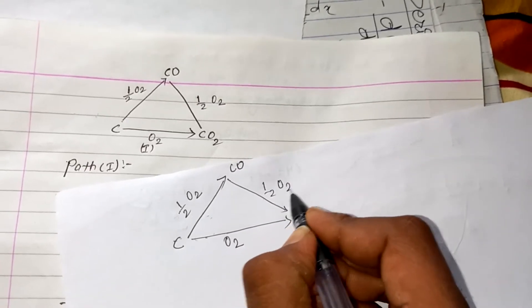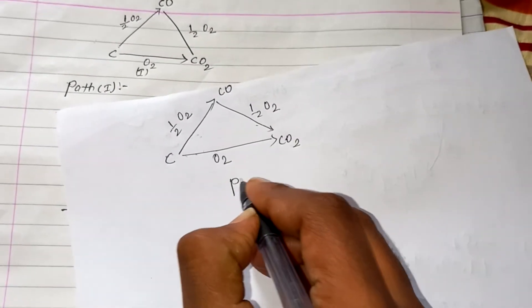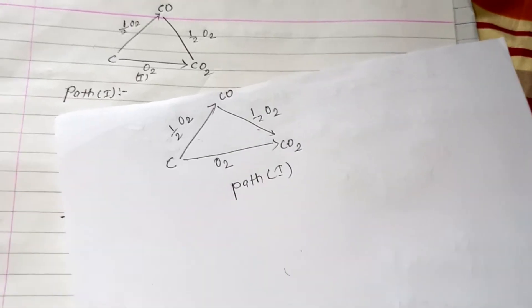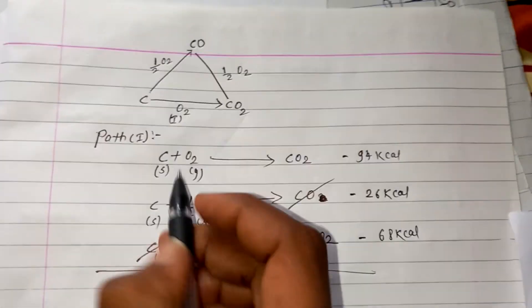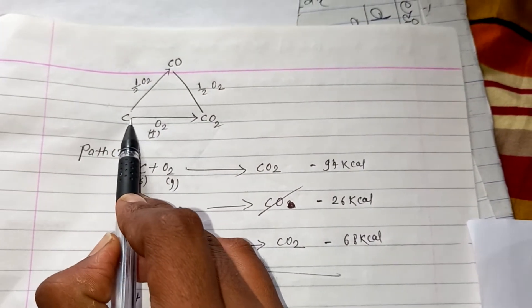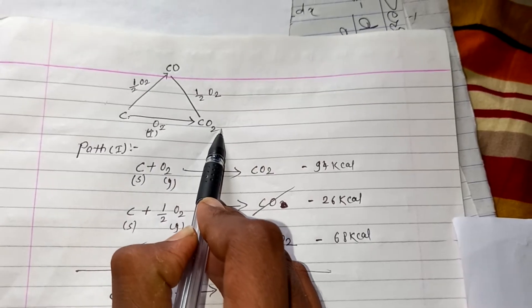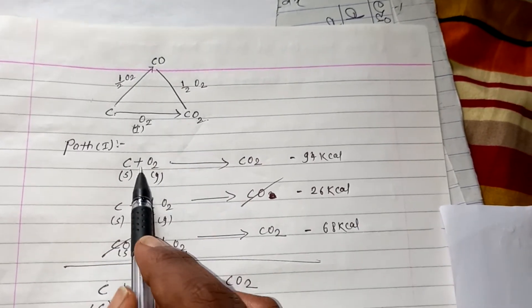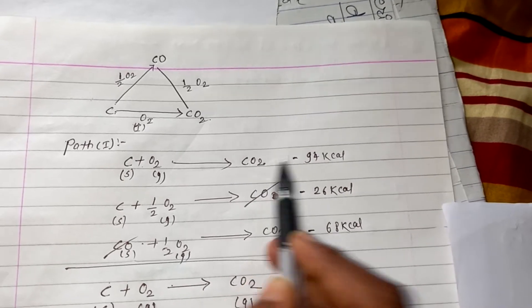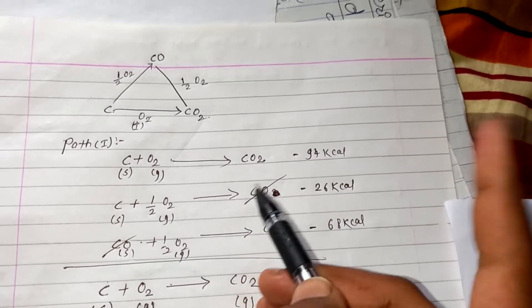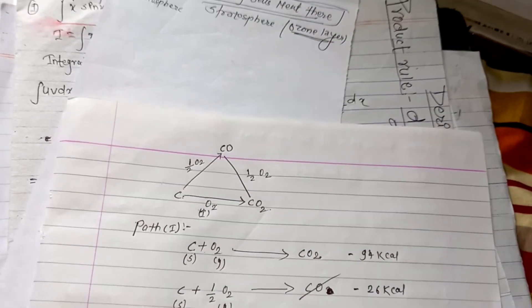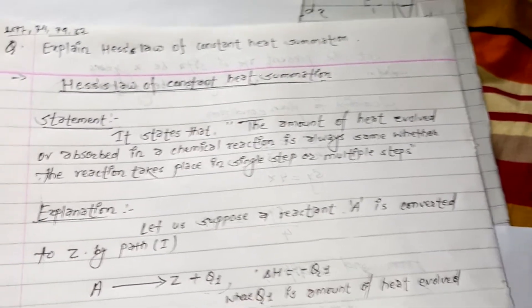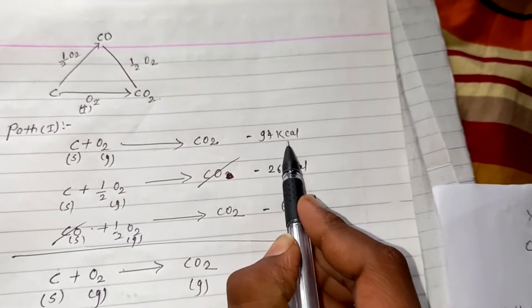Now let's look at a numerical example to illustrate this. Path 1: C plus O₂ gives CO₂, with an enthalpy change — heat evolved — of minus 94 kilocalories. This is the direct single-step combustion of carbon.